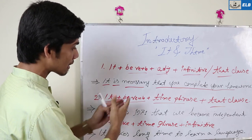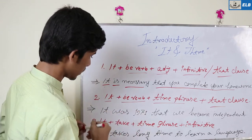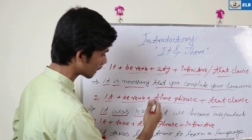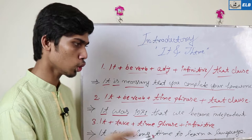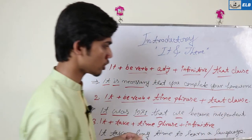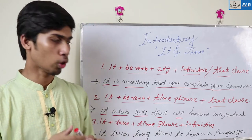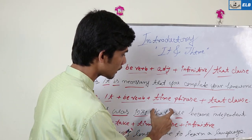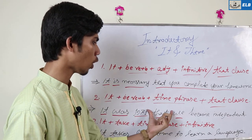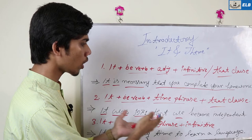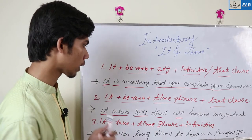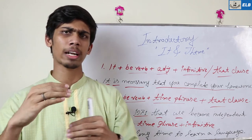Example of Rule 2: 'It was 1971 when we became independent.' The structure is: it + be-verb + time phrase. In Bangladesh, it was in 1971 that we became independent. 'It was 1971 when we became independent.'